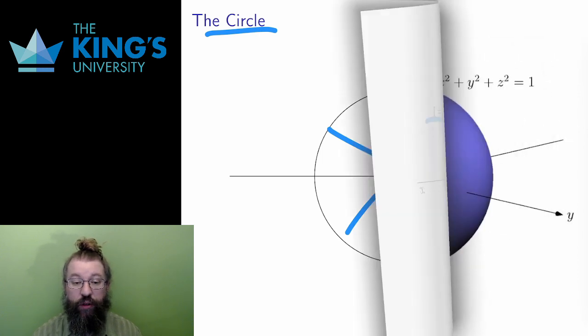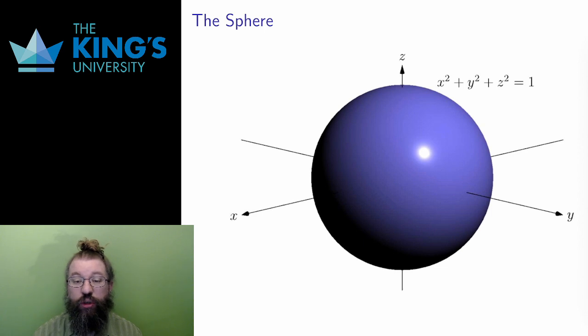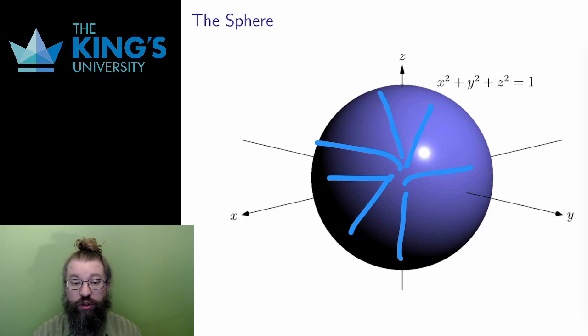Next is the sphere in R3. It has the same geometric definition. It is all points which are one unit of distance from the origin in R3. It also has an equation, x squared plus y squared plus z squared equals 1. The only change from the two dimensional equation is the addition of the z squared term.